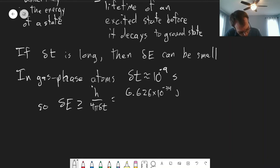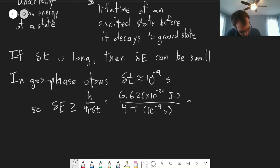So we have Planck's constant here on the top, joules times second, 4π, and then we can put 10 to the minus 9 seconds here. And so that gives us something that's on the order of 10 to the minus 25 joules. So a very small uncertainty in the energy.